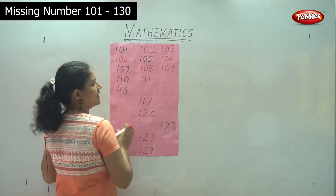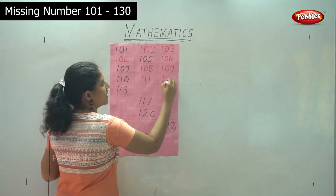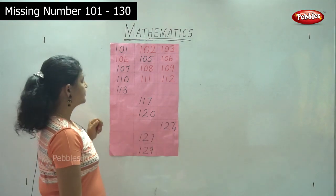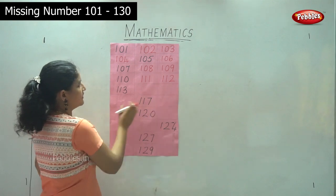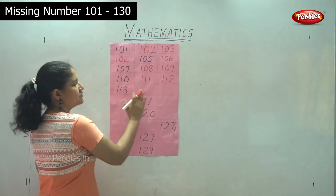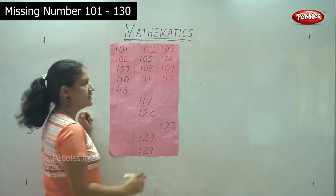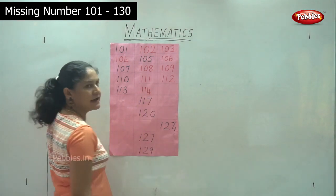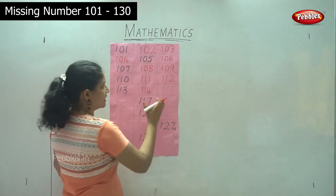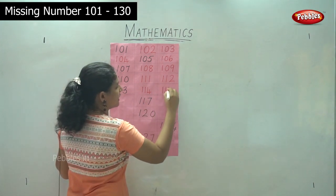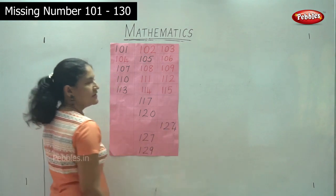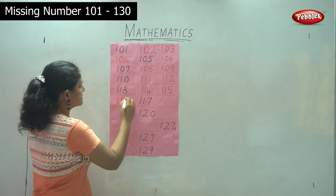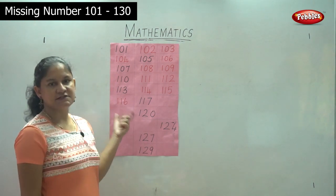After 111 comes 112. After 112 we have 113. After 113 comes 114. Then we have 115. And the next number is 116.